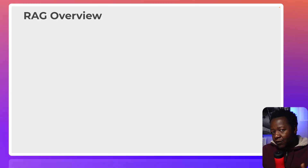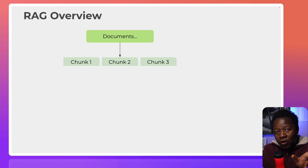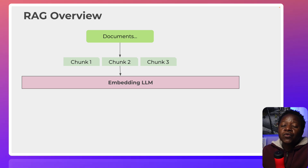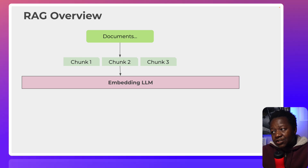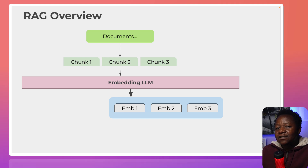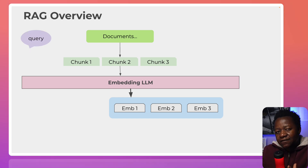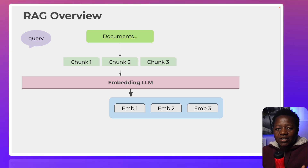Let's look at the overview of a RAG system. At the top we have documents. These documents need to be chopped into small pieces and then go through a process of embedding — we extract them and create a numerical, vector representation of those documents. That is what is saved as embeddings into a database — usually a vector database, a special kind of database.